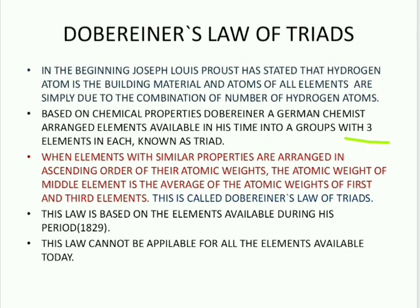This is called Dobereiner's Law of Triads. Whatever elements were available in his time, he arranged them in ascending order of their atomic weights, and he noticed that among the three elements, the atomic weight of the second element is equal to the arithmetic mean of the first and third. This law is applicable only to the elements available in his time and is not applicable to elements at present.